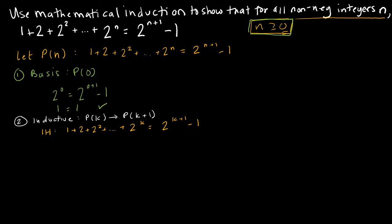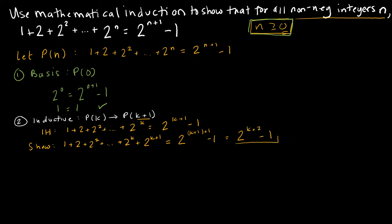Now let's look at our inductive step. Recall our inductive step says assume p of k, show that implies p of k plus 1. So we start by writing our inductive hypothesis with k's in place of n every time: 1 plus 2 plus 2 squared all the way up through 2 to the k is equal to 2 to the k plus 1 minus 1. Then what I need to show is: 1 plus 2 plus 2 squared plus 2 to the k plus 2 to the k plus 1 is equal to 2 to the k plus 2 minus 1.